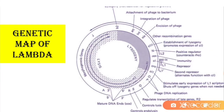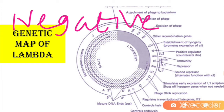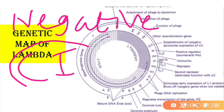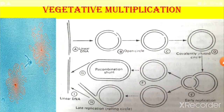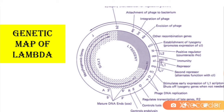The negative regulation genes: the repressor required for maintenance of the prophage in the lysogenic condition is determined by the gene cI. This is the negative regulation gene required for the negative regulation of lambda phage. The products of cII and cIII genes have an accessory role to cI in lysogeny. The cI product acts on two sites on the DNA.